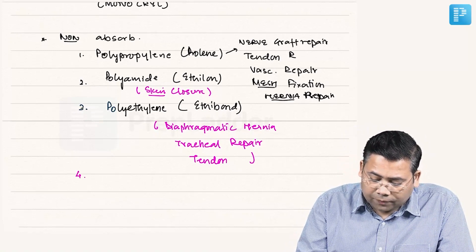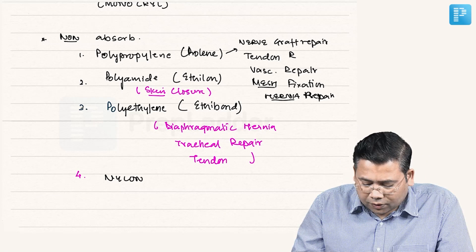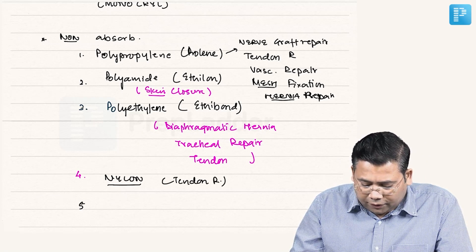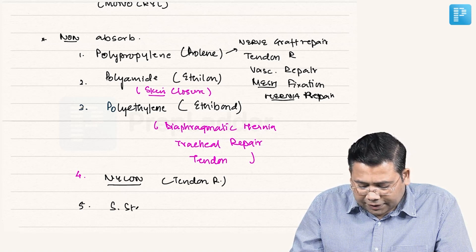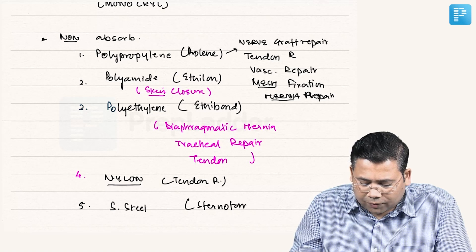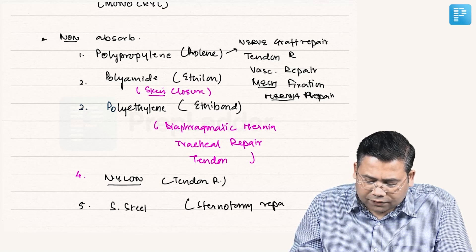Then we have nylon. This is again a suture for tendon repair. Then we have SS stainless steel, stainless steel that is for sternotomy repair. So this is very important. These are some important sutures that we use.